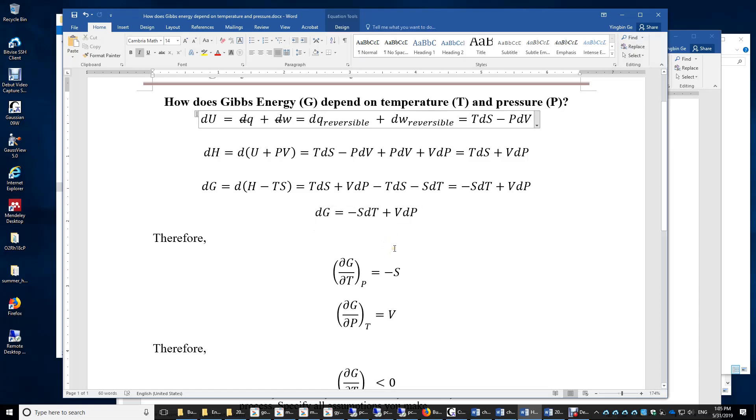How does the Gibbs energy of the system depend on temperature and pressure? We start from the equation for the change of U. Heat or work may change the internal energy of the system. Therefore, dU equals dQ plus dW.